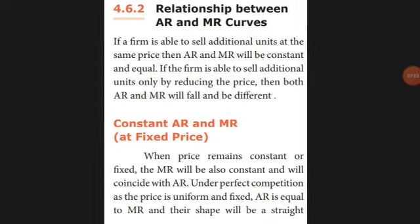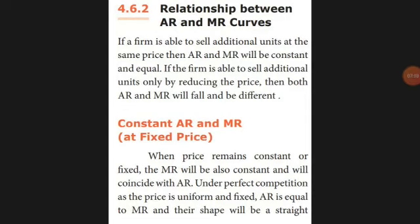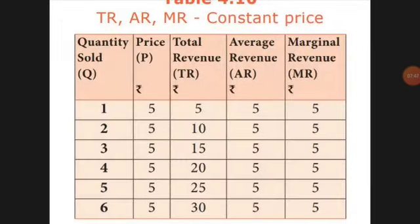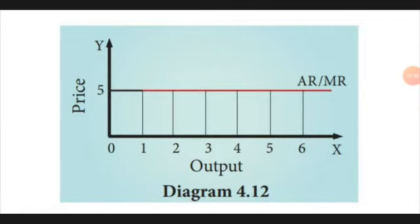Now, what is the relation between the AR and MR curves? If I am selling additional units at the same price — price remains constant — then average revenue and marginal revenue will both be the same. There will be no change. In the diagram, both curves appear as the same parallel straight horizontal line — no up and down.